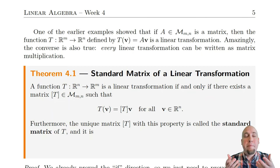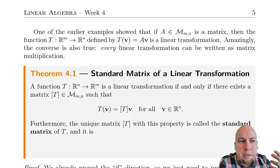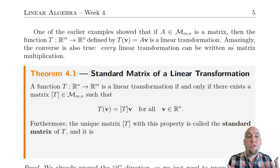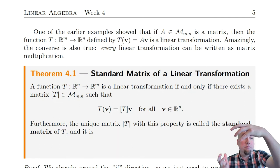To motivate this, remember back to one of the first examples of a linear transformation we saw: if A is any fixed matrix, then the function defined by sending V to A times V, where V is just some column vector, that function is a linear transformation. In other words, matrix multiplication is a linear transformation — if you just take a column vector and multiply it by a matrix, that's a linear transformation.